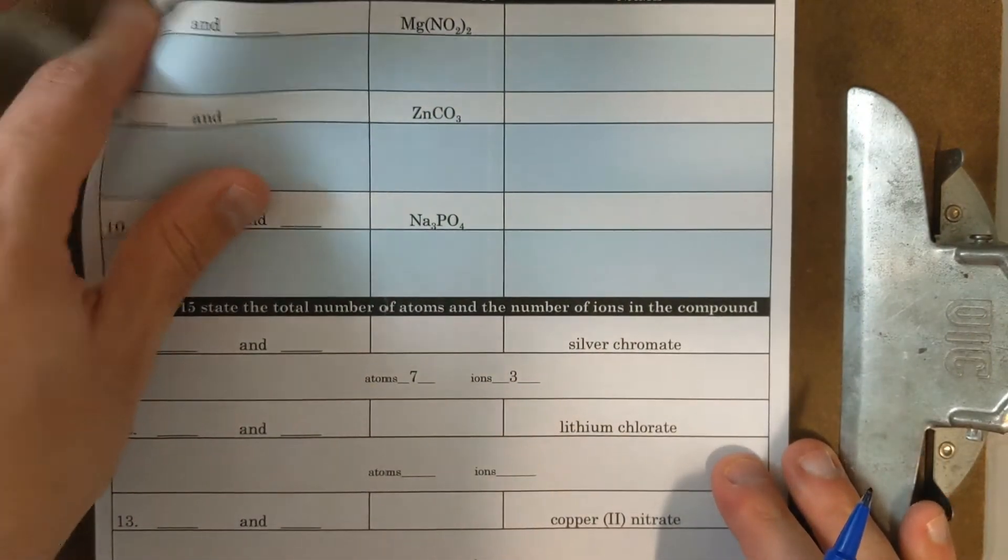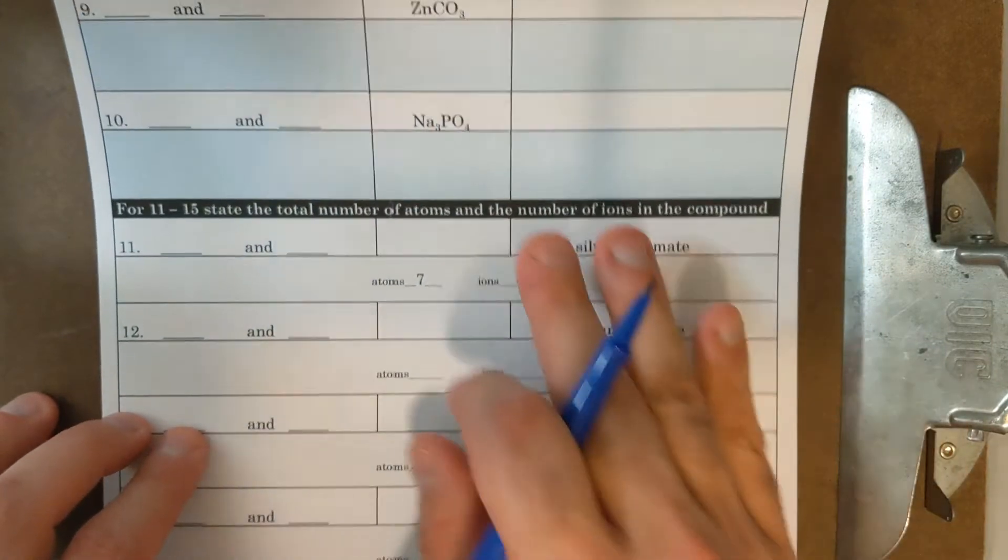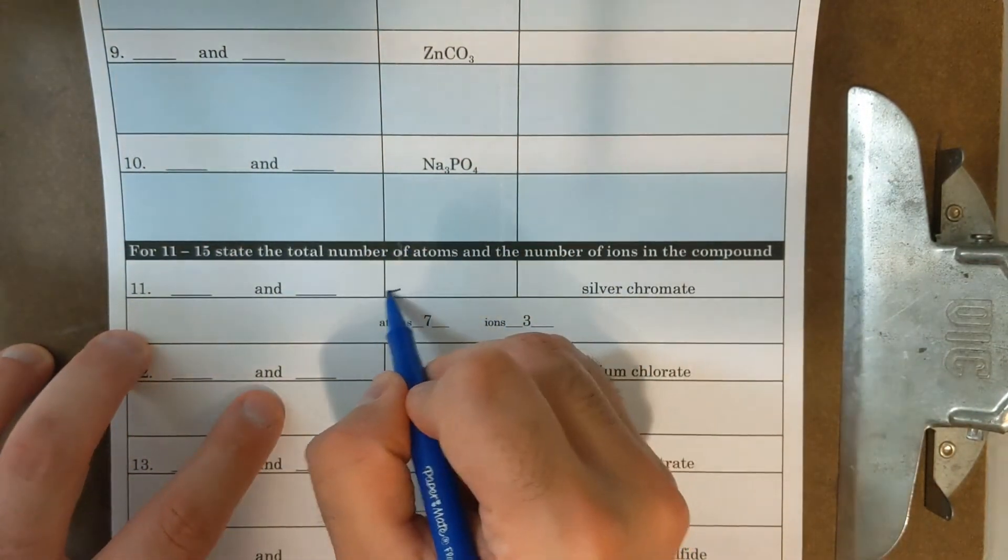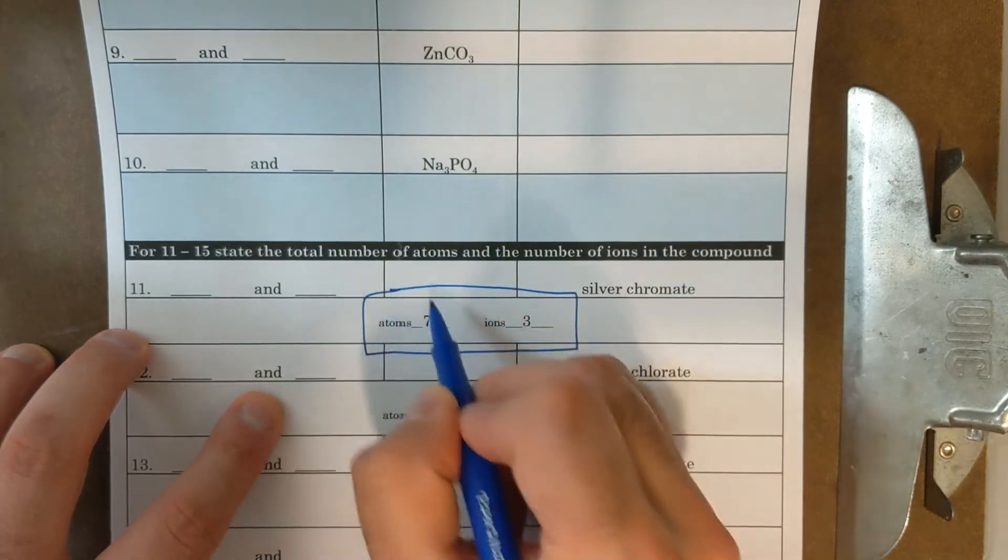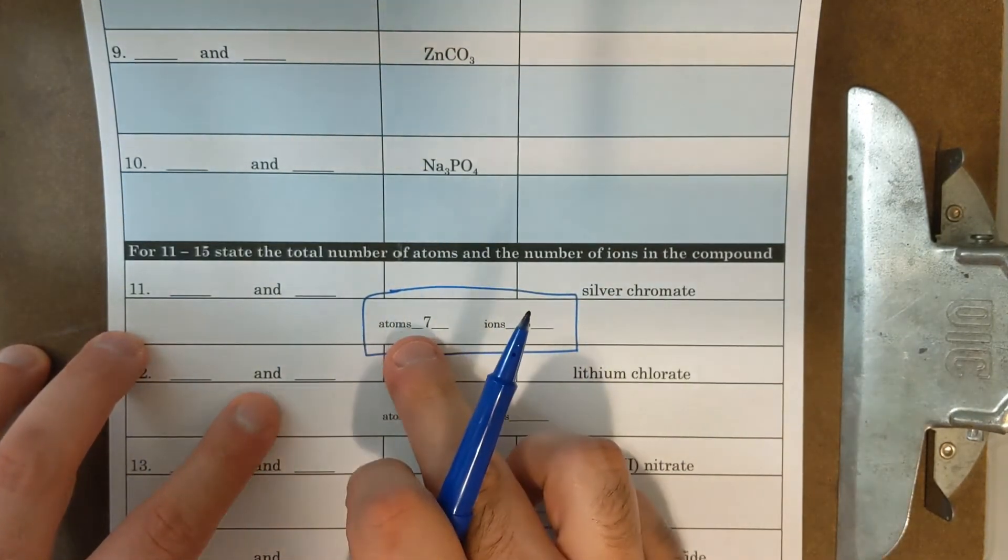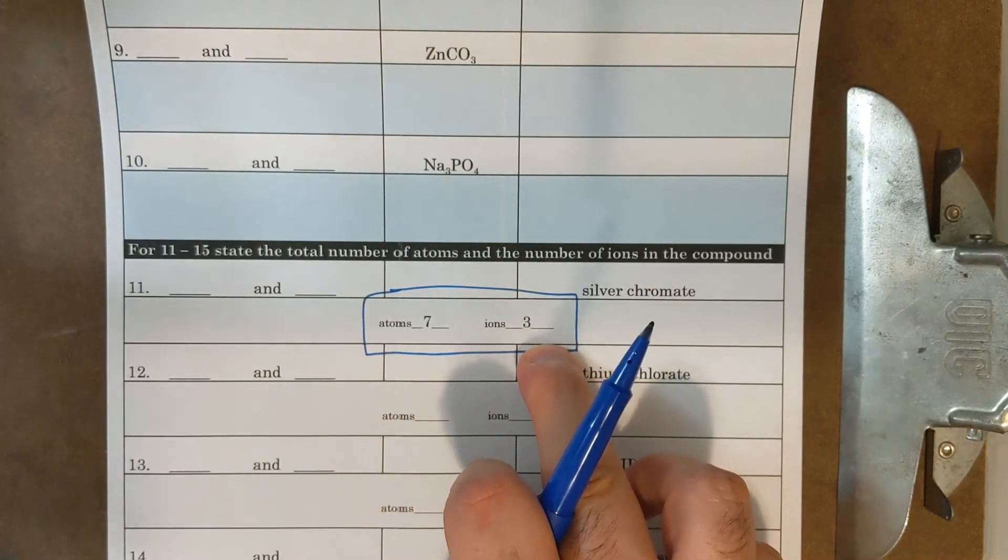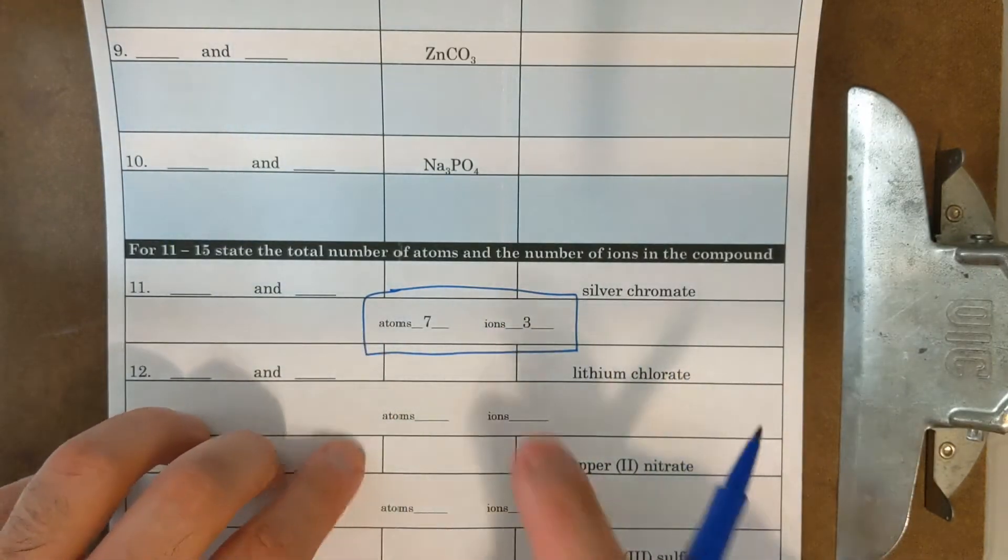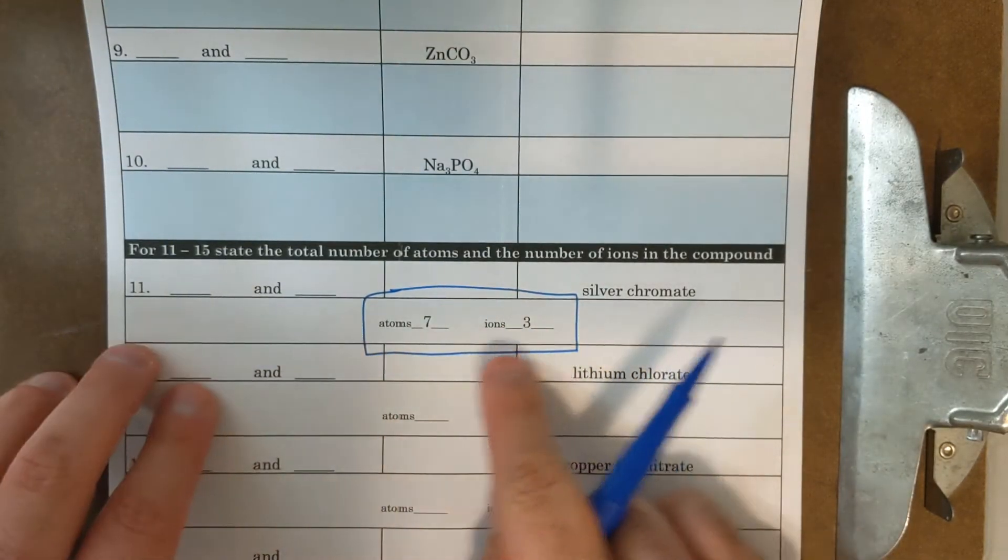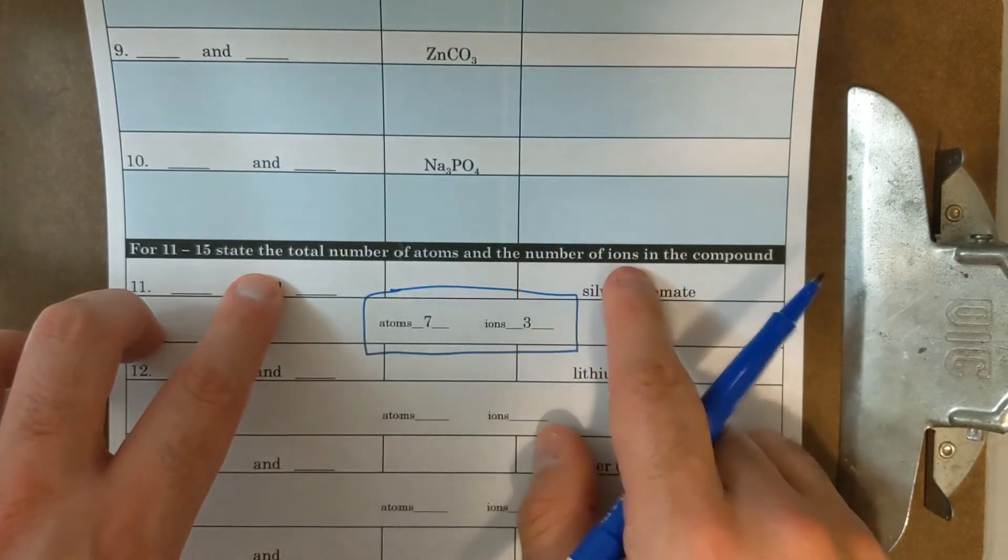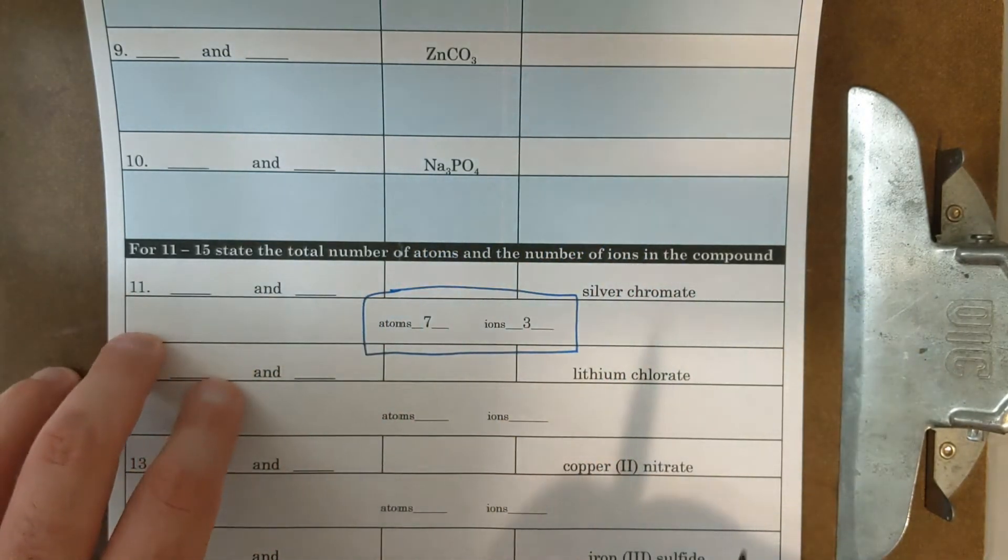But now I'm going to walk us through number 11. So for number 11 in my slideshow, I did make a note that I have a typo in your worksheets. It says six and two, it really should be seven and three. And you'll see why I made a quick typo in making this worksheet. So fix that. So it's seven and three. And so for 11 through 15, it says state the total number of atoms and the total number of ions in the compound.